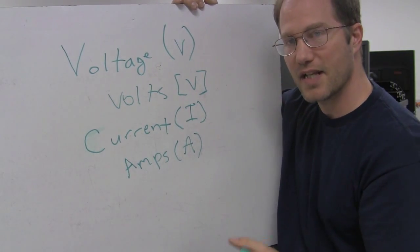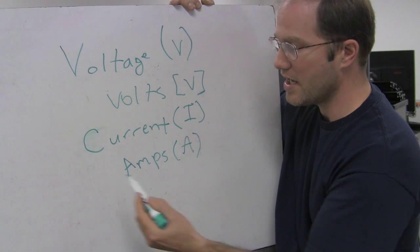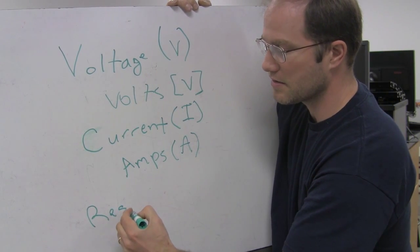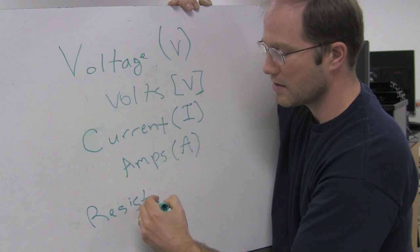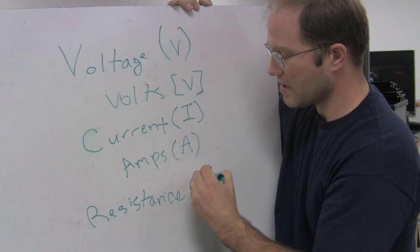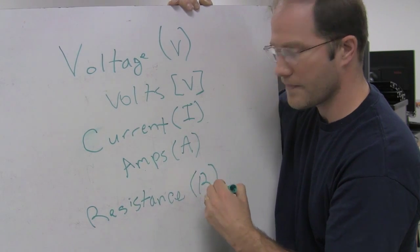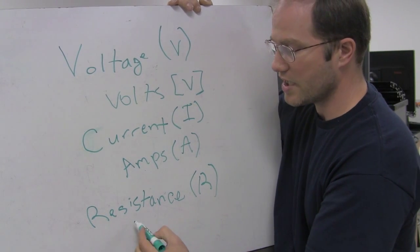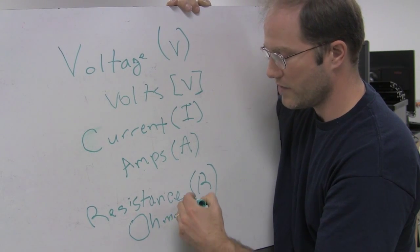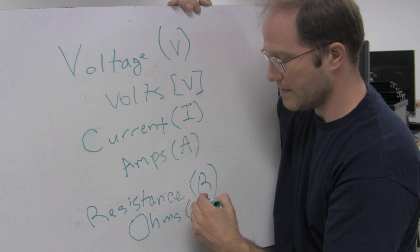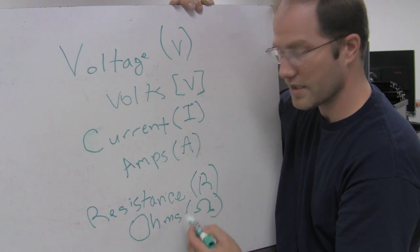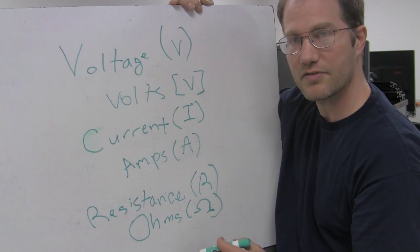Sometimes milliamps, mA. And last of all, we'll be looking at resistance. Resistance is R and it's going to be measured in ohms, which is this Greek symbol here — looks like an upside-down horseshoe, capital Omega.